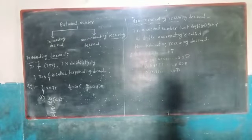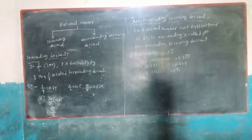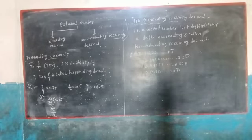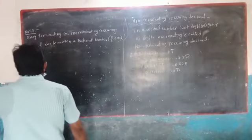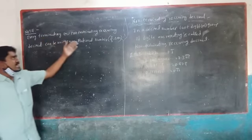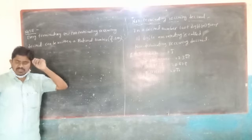So every rational number can be written as a terminating decimal or non-terminating recurring decimal. And conversely, every terminating or non-terminating recurring decimal can be written as a rational number in the form P/Q, where Q is not equal to 0.